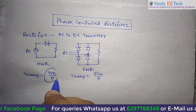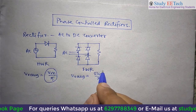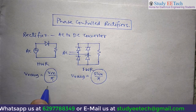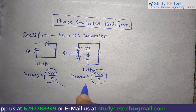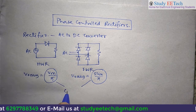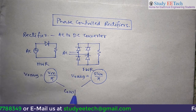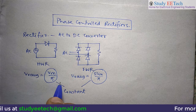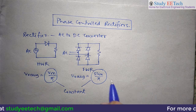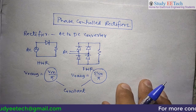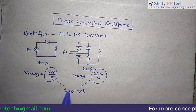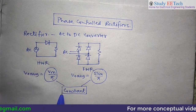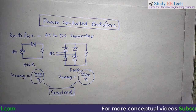But in both cases, whether it is Vm by Pi or 2Vm by Pi, they are constant. Because Vm itself is constant and Pi is definitely a constant, so we will get the average voltage to be constant.